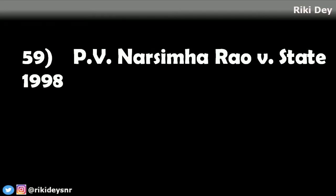The court also observed that such privileges were not necessarily subject to Articles 21 and 22 of the Constitution. Case number 59 is PV Narasimha Rao versus State: the court held that those who took bribe but did not vote will be liable for prosecution under the Prevention of Corruption Act, as they were not protected under Article 105(2) of the Constitution.